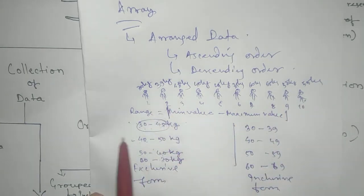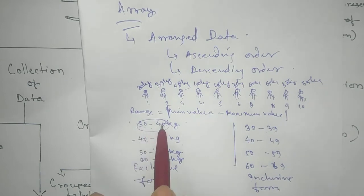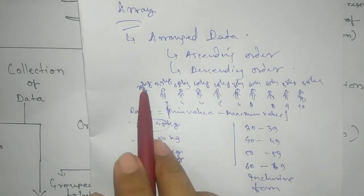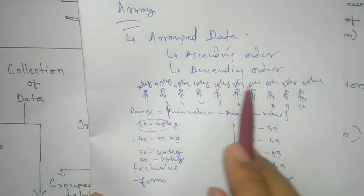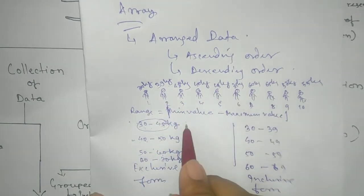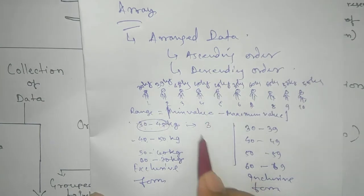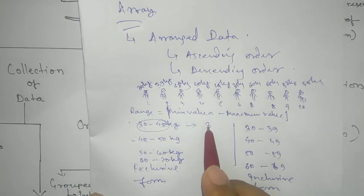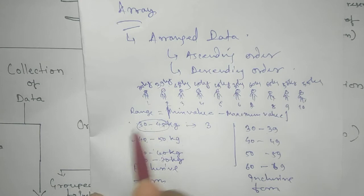So here if count, let's 30 to 40 kg, how many person? 30, 39 is there. More 35, there is three. Three frequency. Frequency means frequency three, that means there are three persons who are in between 30 and 40.